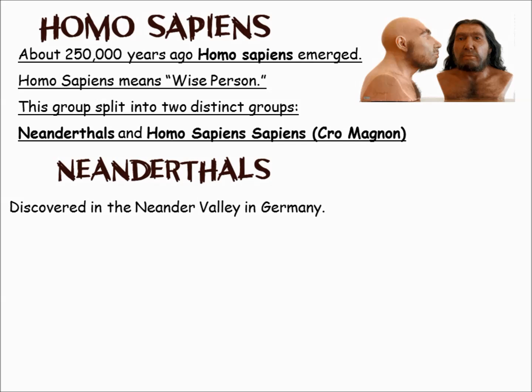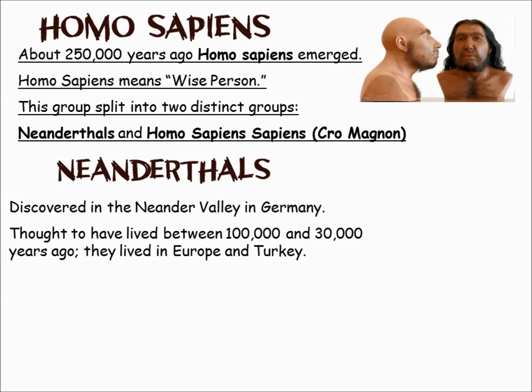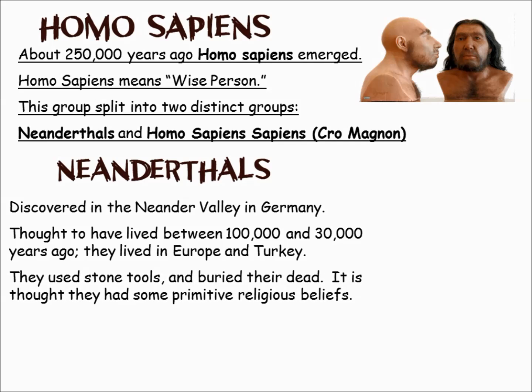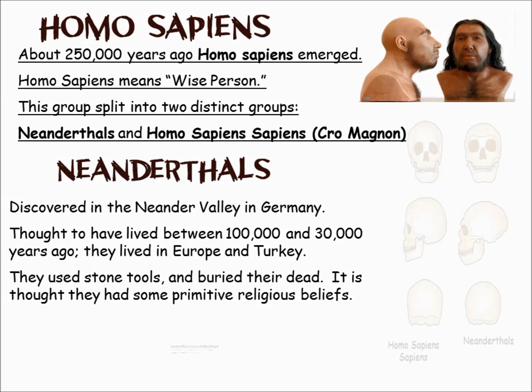Neanderthals were discovered in the Neander Valley of Germany, and were already spread into Turkey and Europe between 100,000 to 30,000 years ago. This group was built for cold weather climates and is a primary reason we have a good understanding of how humans adapt to their climate and environment. They had larger noses, were shorter but thicker with stronger bones, and their surface area helped maintain warmth. We know they used stone tools, buried their dead, and we think they had primitive religious beliefs.